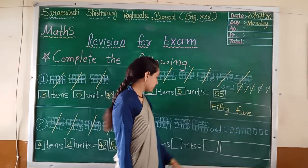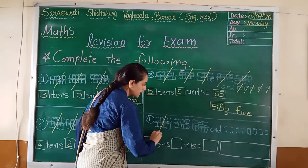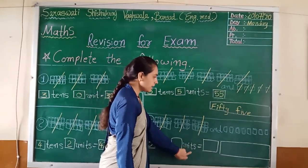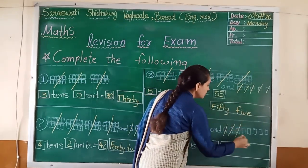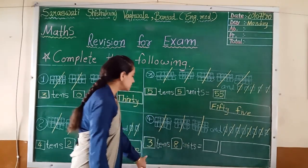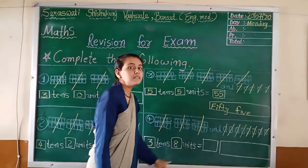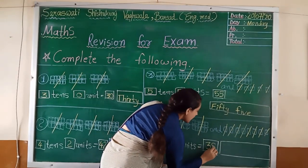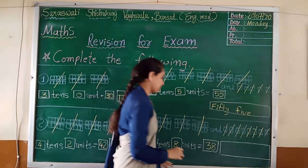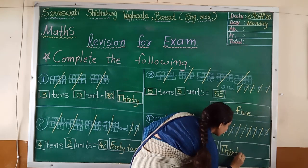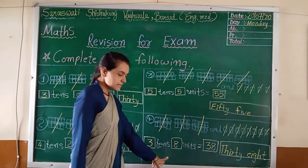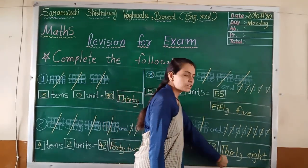Now fourth number. Count: one ten, two tens, three tens. So three tens. Blank units — count: one, two, three, four, five, six, seven, eight. So eight units. Three tens, eight units. The number is 38. The spelling of 38 is T-H-I-R-T-Y-E-I-G-H-T. Three tens, eight units equals 38.